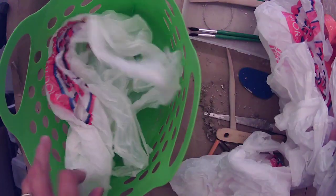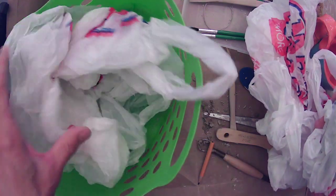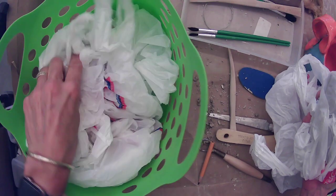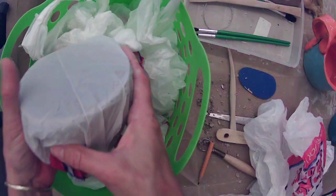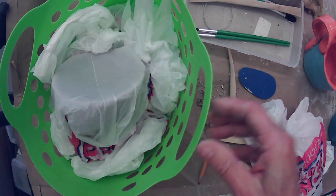Now, you're going to take your basket and put a couple of grocery bags wadded up into the bottom of it. The more you put in there, the more cradled it's going to be. And then you're just going to nestle your piece right inside the basket.